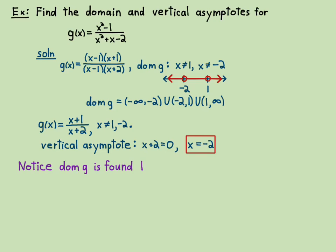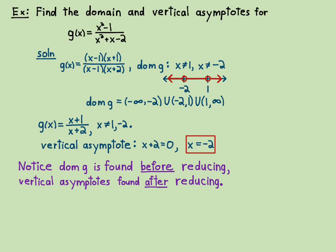So notice that the domain g, this is just to reiterate, the domain g is found before reducing. The vertical asymptote is found after. Asymptotes, there can be more than one. Obviously, you could have more than one factor on the bottom after reducing. The vertical asymptotes are found after reducing, and that's very important to remember.